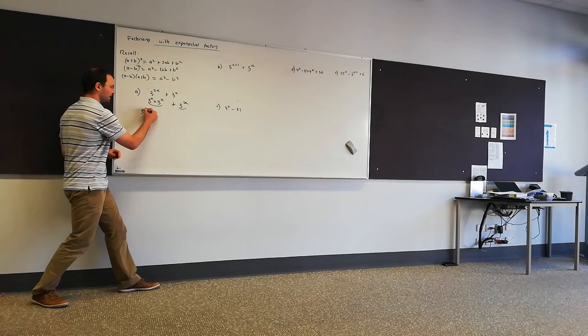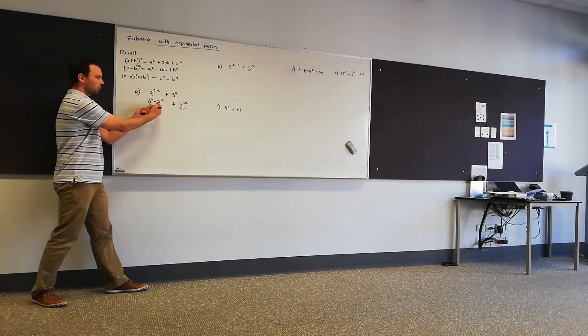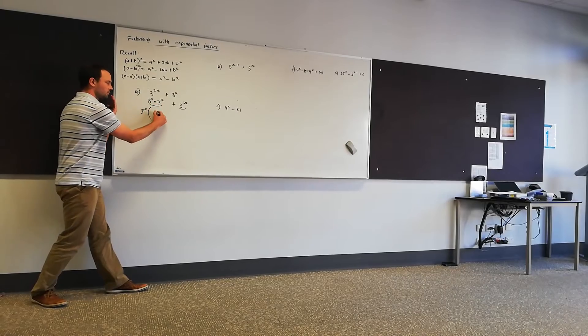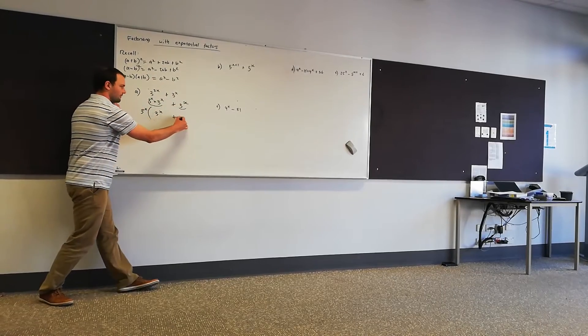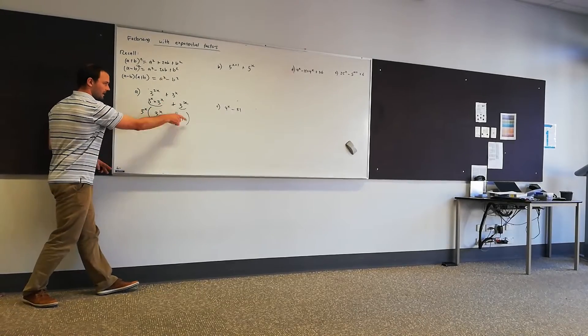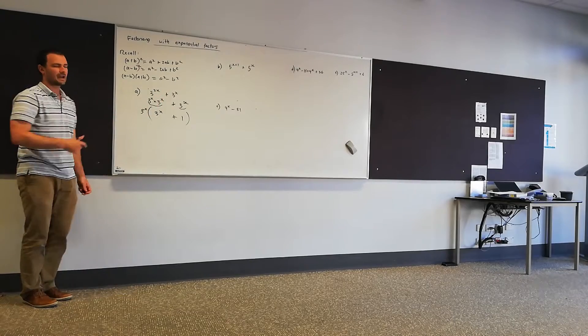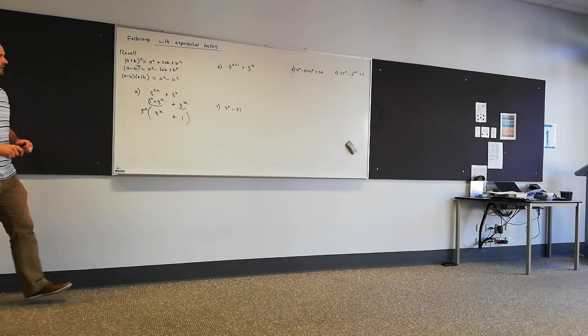3^x. So we're going to pull that out the front and what are we left with in brackets? Well we can only pull one of them out the front so that means we've still got a 3^x hanging here, and if we pull that out the front we're just going to have a 1 there. And the reason you know you've got it right is because if we were to expand that we would get exactly what we have here. Okay, so that's the gist of what we're doing. Let's move on to b.